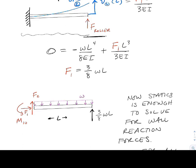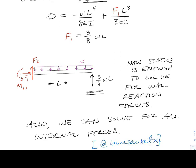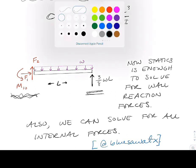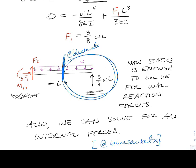Back in the original free body diagram, which had four unknowns, we've now used the kinematic compatibility expression to determine one of them. We can now use statics to solve for forces at the other end, or cut the beam open at X with a free body diagram to find internal forces anywhere along the beam.